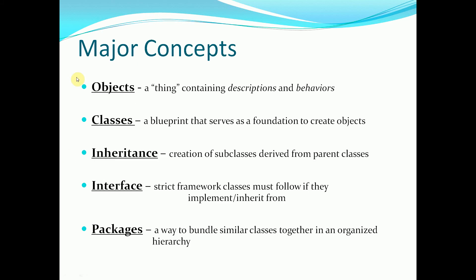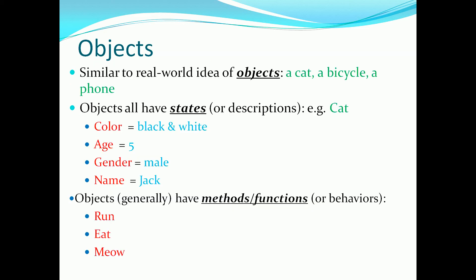Moving on, the major concepts I want to go over are objects, classes, inheritance, interfaces, and packages. The first one we come to are objects. Similar to real-world objects such as cats, a bicycle, or a phone, we can think of objects in programming as having states or descriptions. Using the cat object, we can think of describing a cat by its color, age, gender, or by a name we assign it. Objects also have methods or functions — what we might define as behaviors. So a cat can run, eat, or meow, and these would all be behaviors or functions we can define for the object cat.